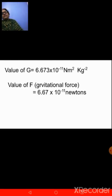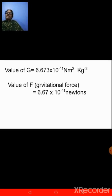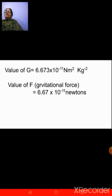The accepted value of capital G is 6.673 into 10 raised to minus 11 Newton meter square kg raised to minus 2. You can write it as 6.67 as well. So the value of capital G is 6.673 — this is the accepted value given in your textbook. When you substitute values in the formula for capital F, that is G into capital M into small m upon D square, you get the value 6.67 into 10 raised to minus 11 Newtons. You have to focus on the value of capital G, which is 6.673 into 10 raised to minus 11 Newton meter square kg raised to minus 2.